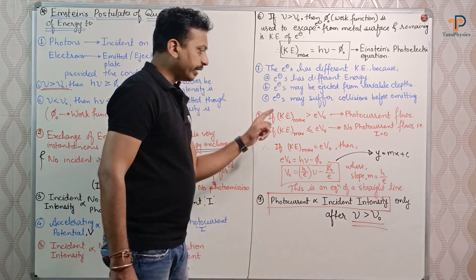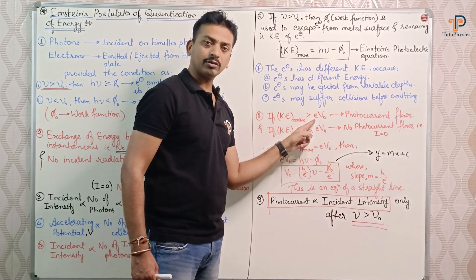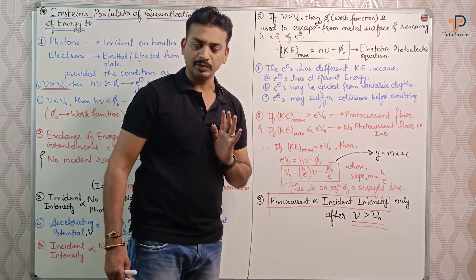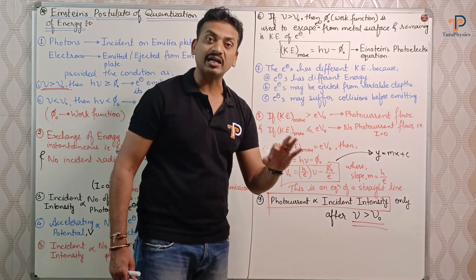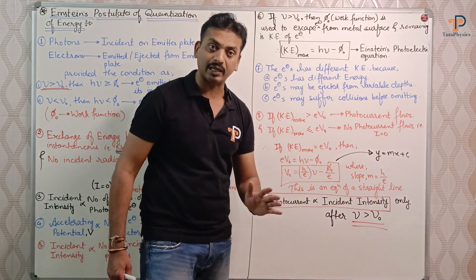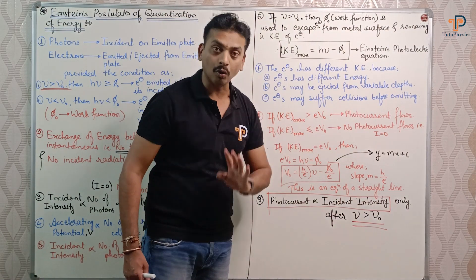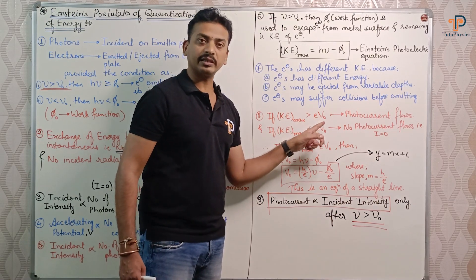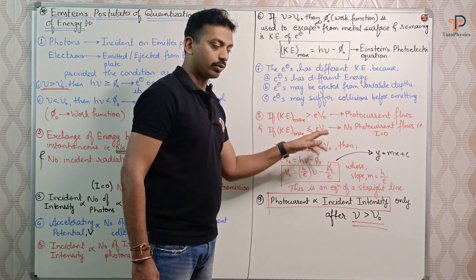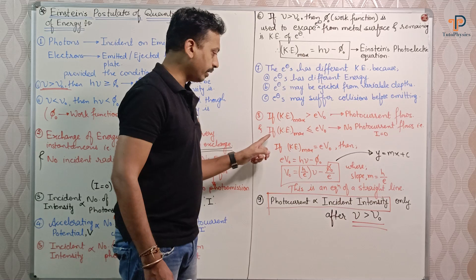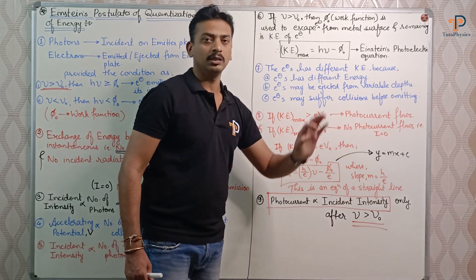The 8th point: if KE_max is greater than e·V₀ — where e is the electronic charge and V₀ is the stopping potential (the retarding potential that stops the electron flow) — then photocurrent will flow. If KE_max is less than or equal to e·V₀, then no photocurrent flows, that is, photocurrent becomes zero.